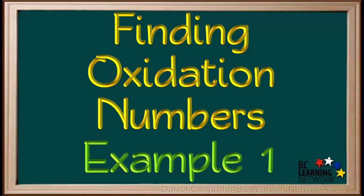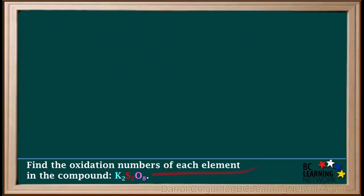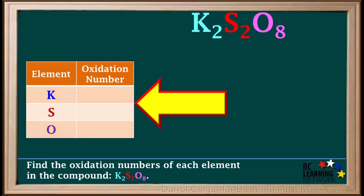Here we'll go through an example of finding the oxidation numbers of each element in a compound. We're asked to find the oxidation number of each element in the compound with the formula K2S2O8. We'll start by writing the formula up here and a table over here to list the oxidation numbers.